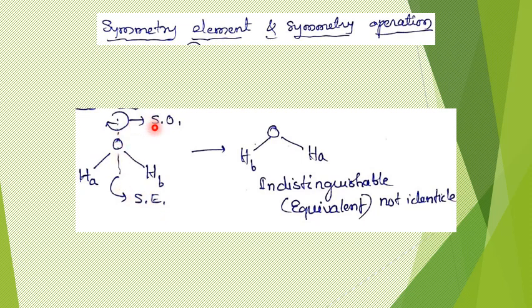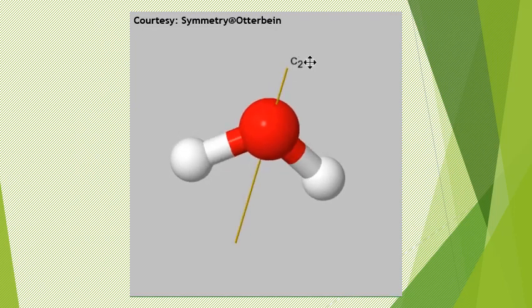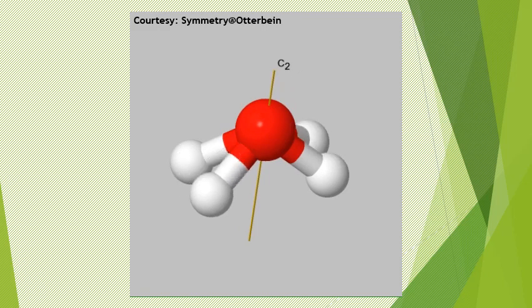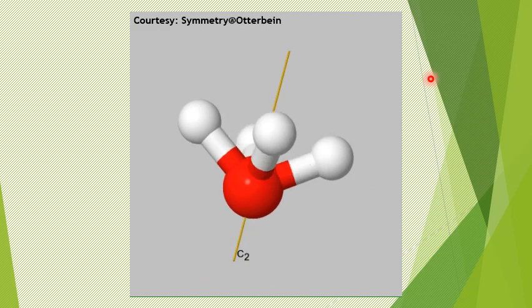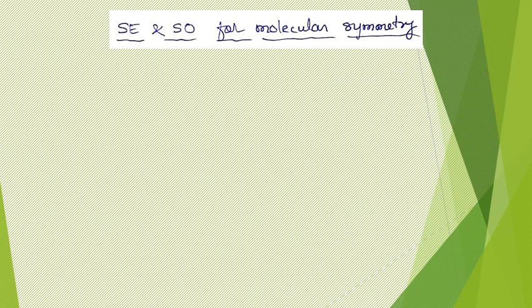Let me use three-dimensional animation to demonstrate the same phenomenon, since some difficult cases cannot be shown in a two-dimensional way. In this particular case, the axis represented as C2 is the symmetry element. On that C2 axis, the molecule has been rotated — that rotation of the molecule by 180 degrees is the symmetry operation. Different orientations have been shown, demonstrating that C2 is the symmetry element and the molecular rotation is the symmetry operation.